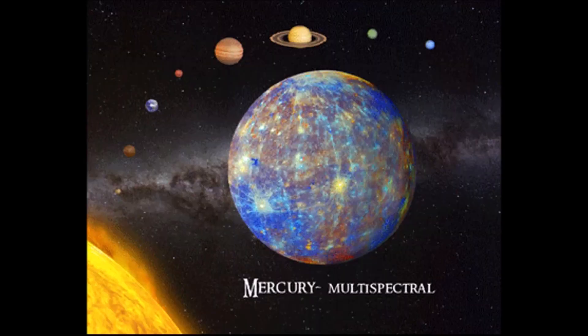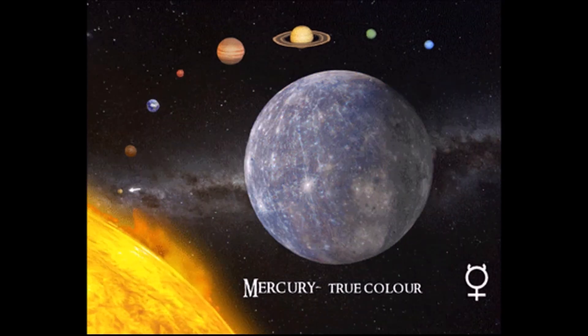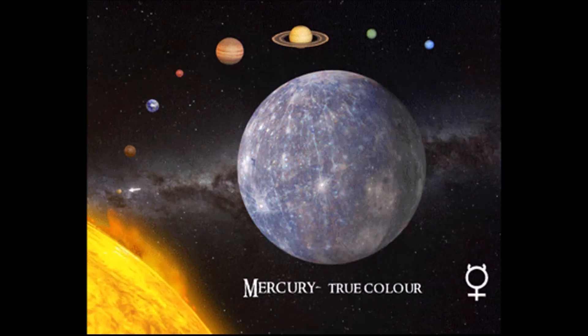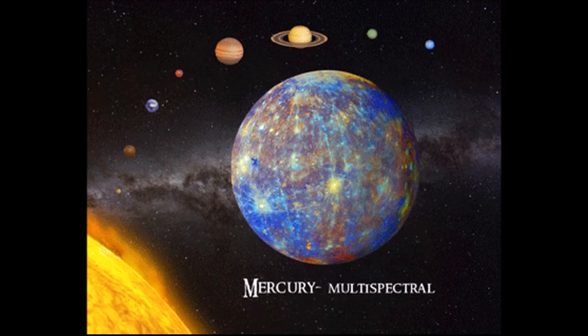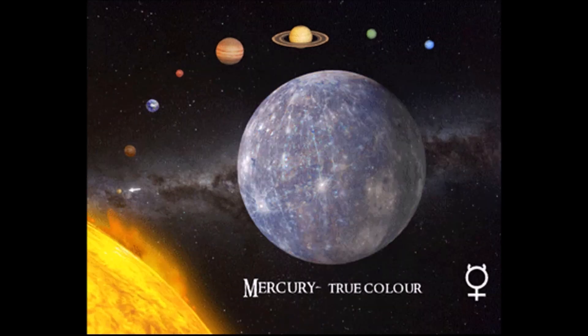Now the first planet of solar system is Mercury. Our ship has been landed on Mercury. And it is the closest to the sun. And it is the hottest planet in the solar system. And it is the smallest planet in the solar system.